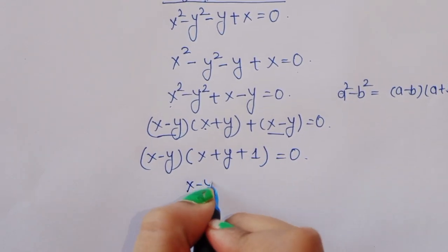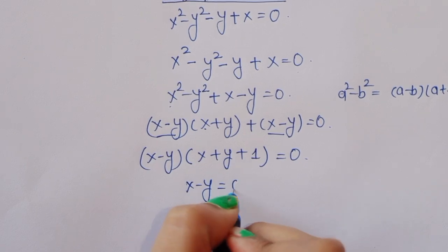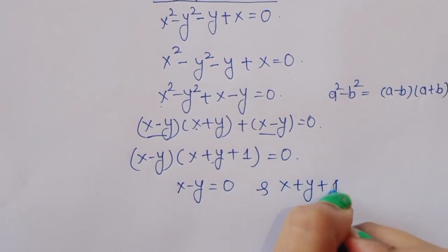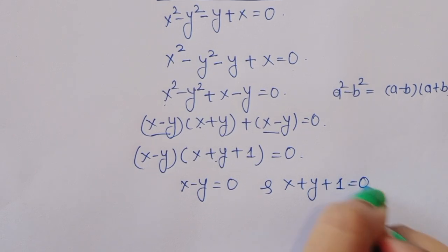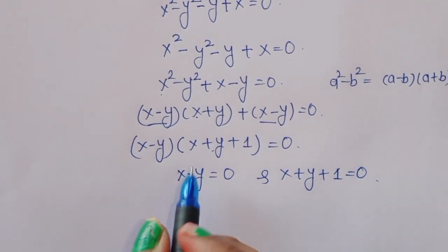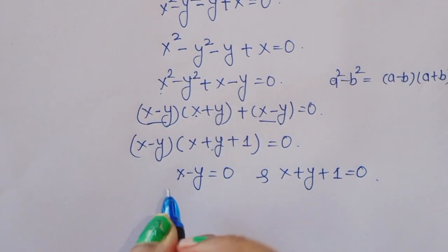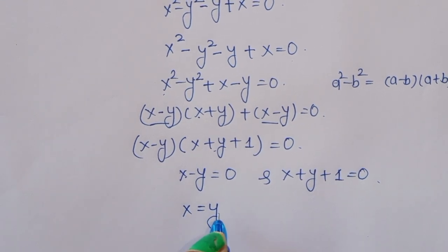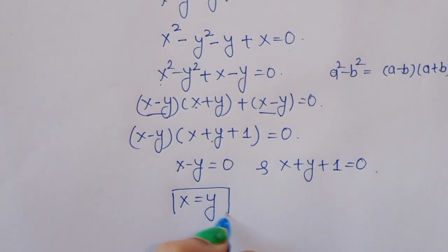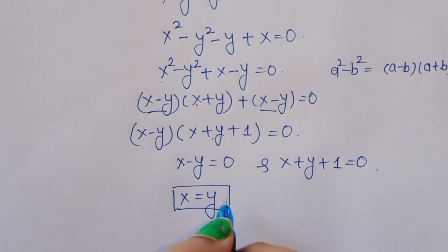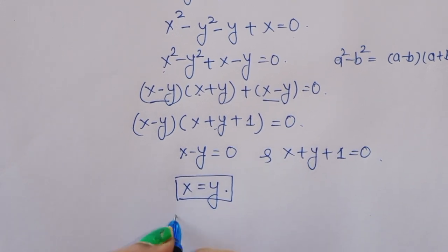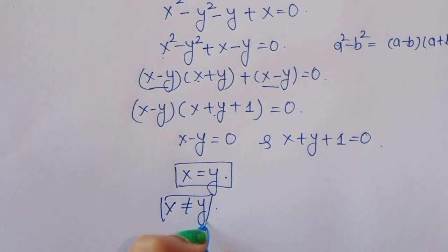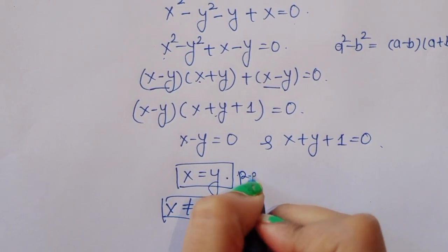Now, x minus y equals 0 means x equals y. But x equals y is not a valid solution because the condition given is x not equal to y. Therefore, this case is rejected.